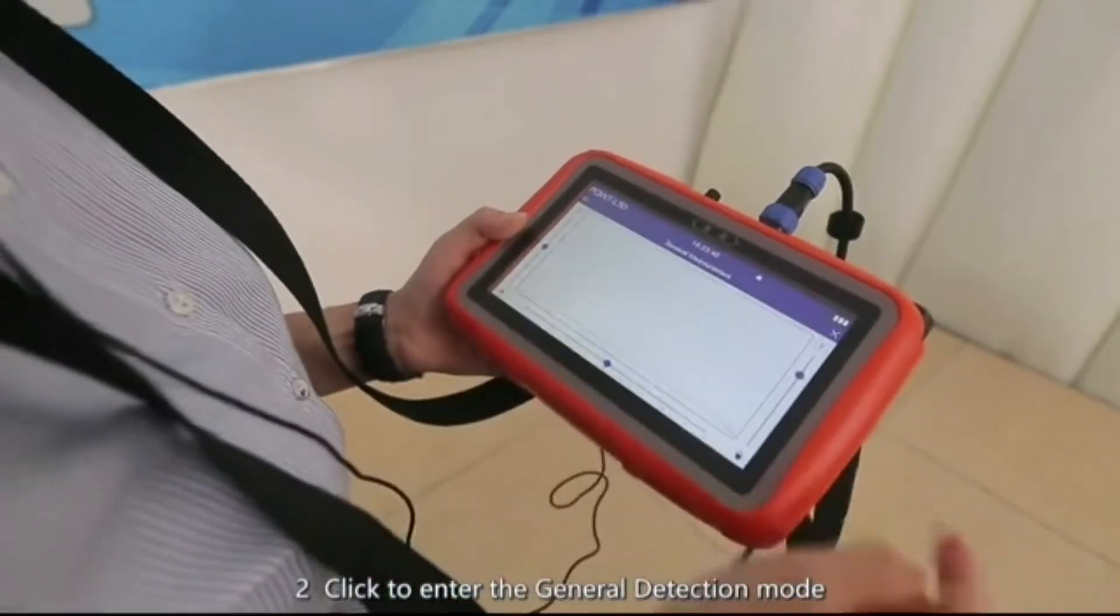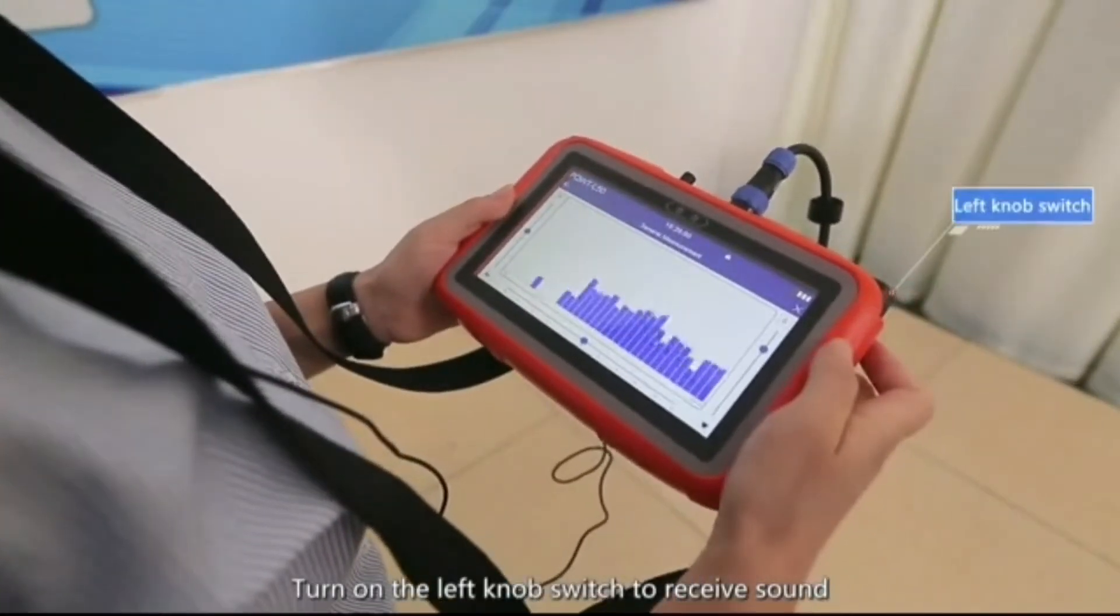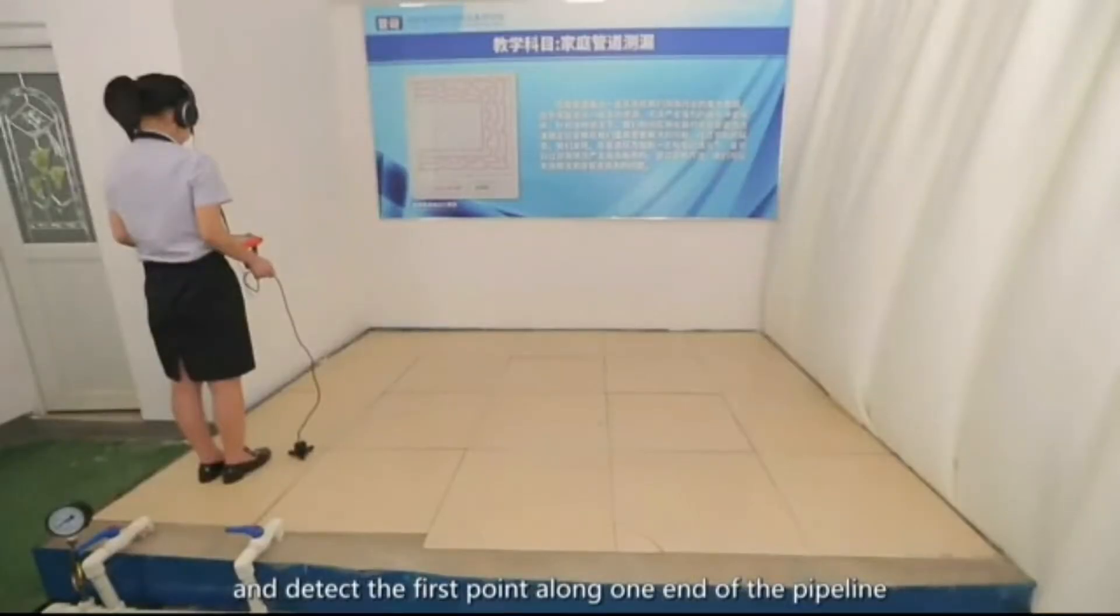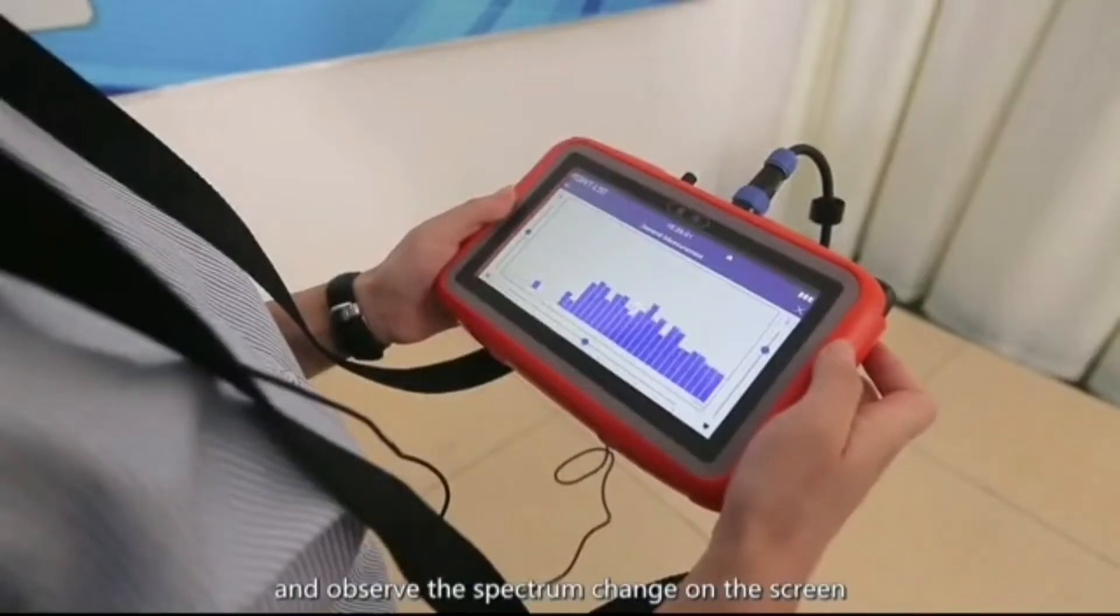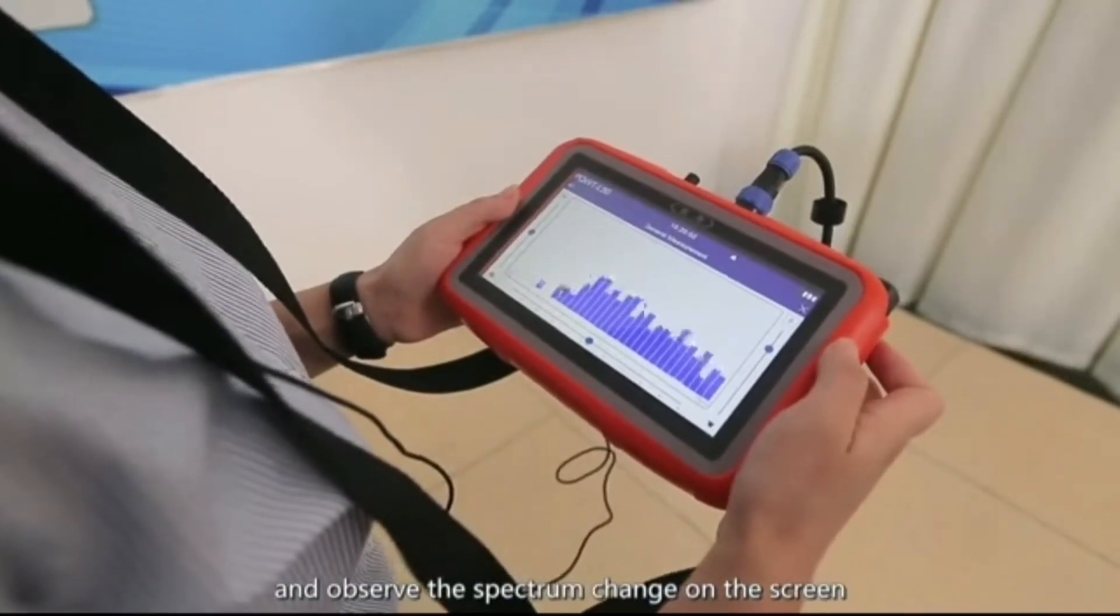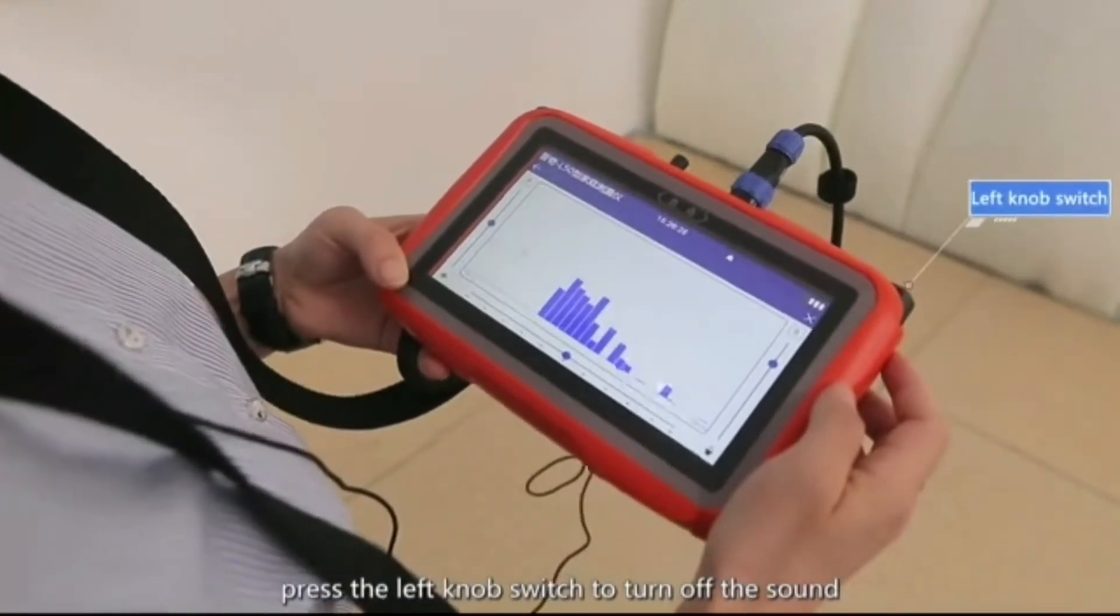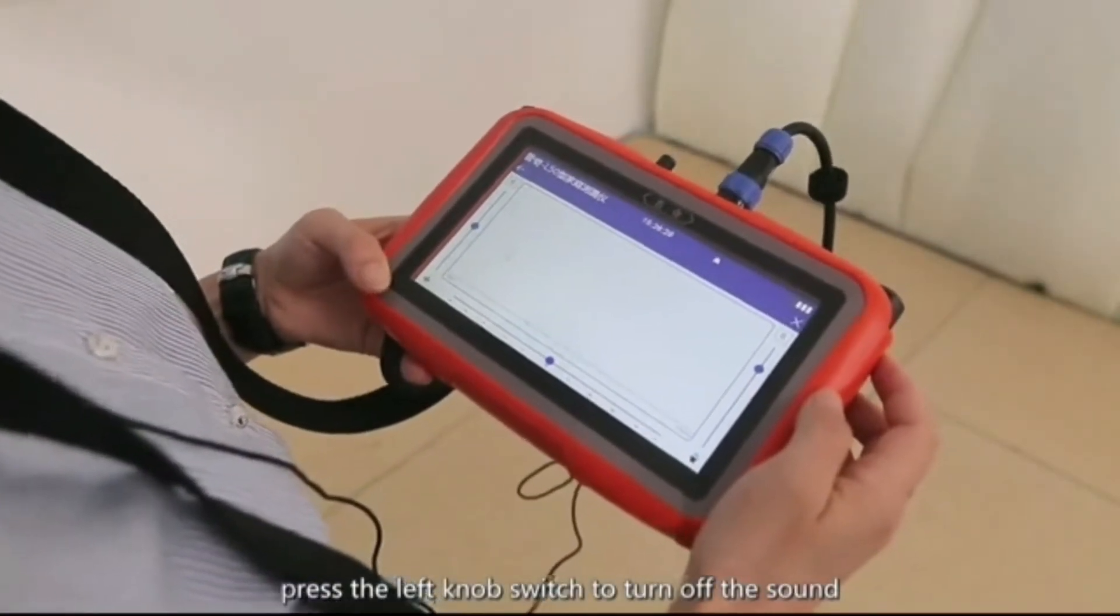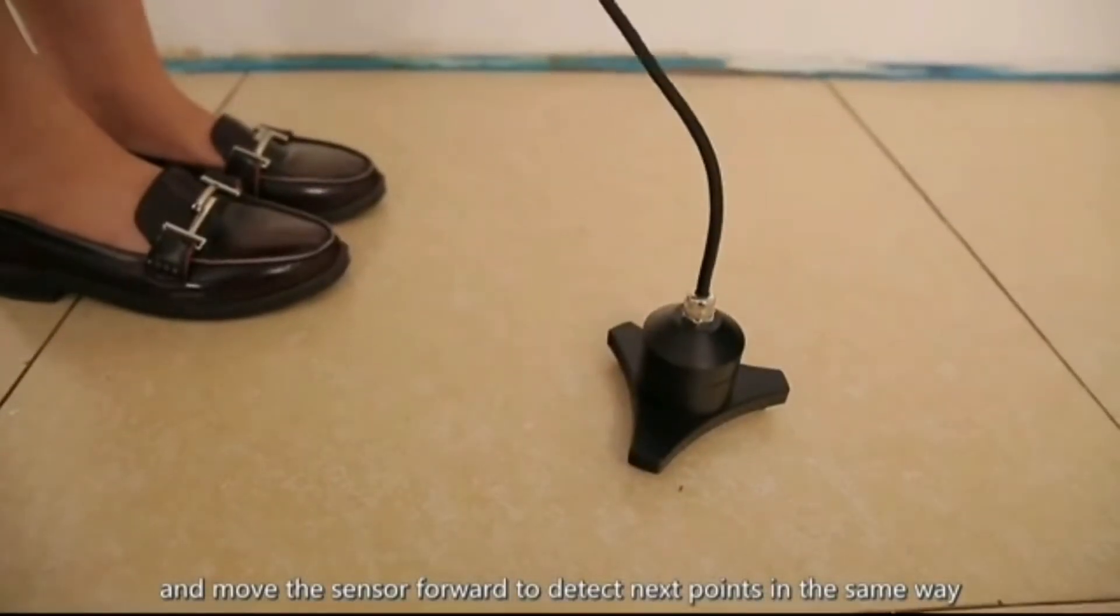Two, click to enter the general detection mode. Turn on the left knob switch to receive sound and detect the first point along one end of the pipeline. Pay attention to the sound volume in the headset and observe the spectrum change on the screen. After detection of the first point, press the left knob switch to turn off the sound and move the sensor forward to detect next points in the same way.